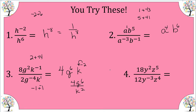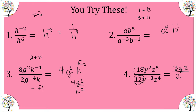Our last one: 18 over 12 — divide by a factor of six, that gives us three over two. We have base Y and base Z. For Y: two minus negative three gives us five. For Z: five minus four gives us one — I won't write that exponent in. So our answer is three over two, Y to the fifth, Z.